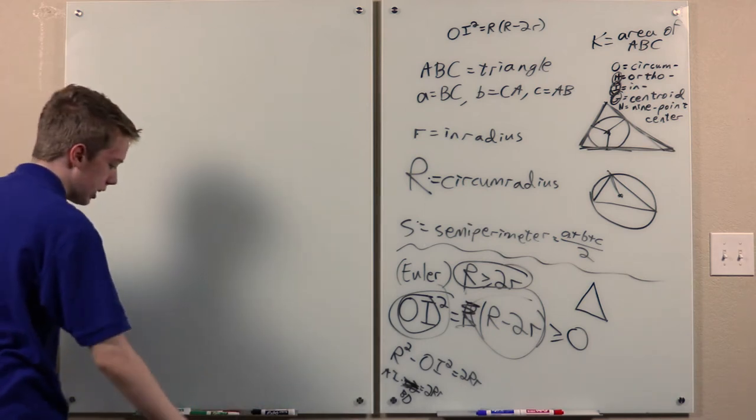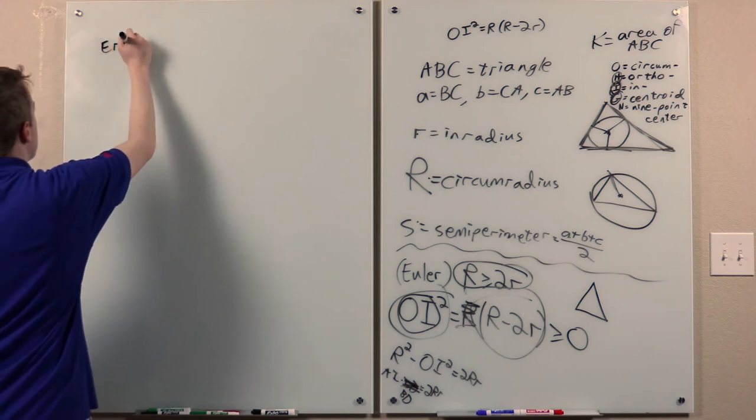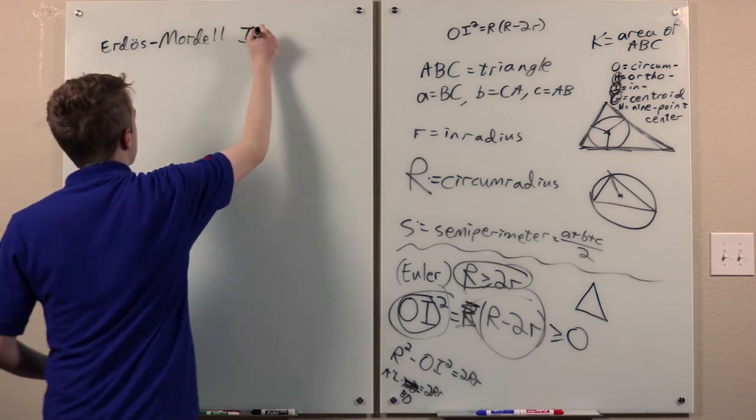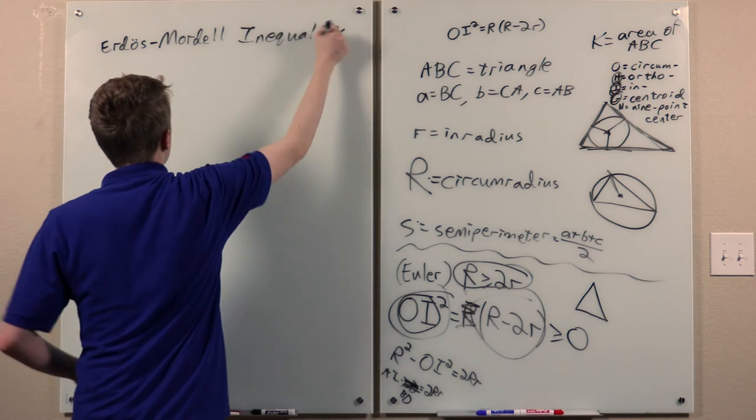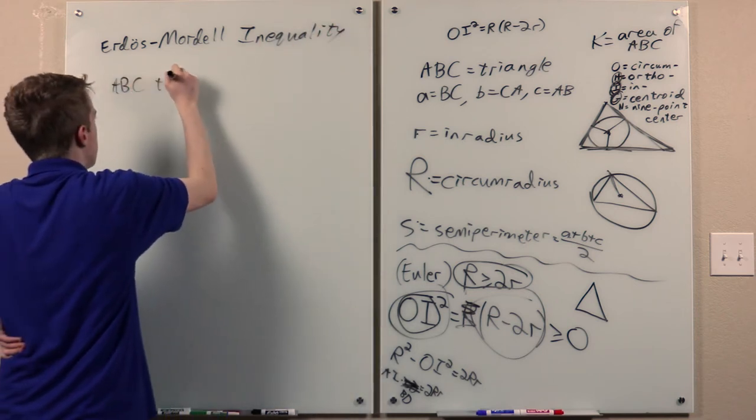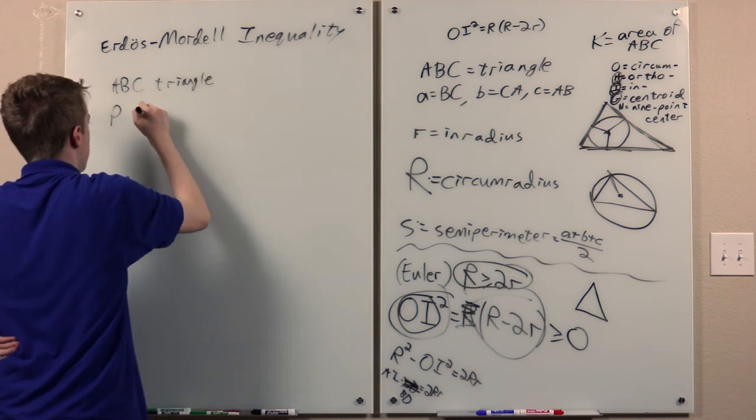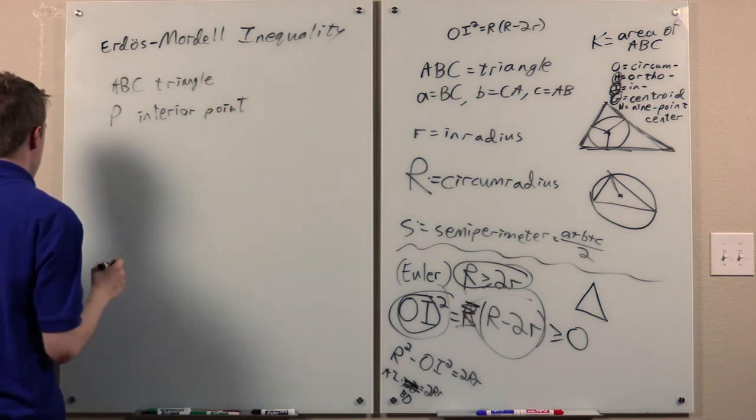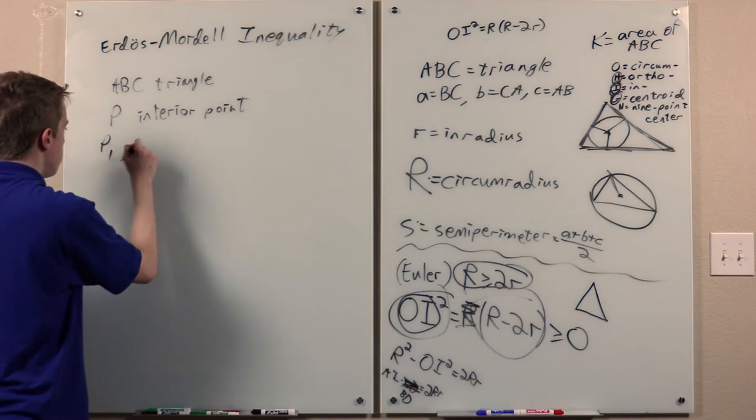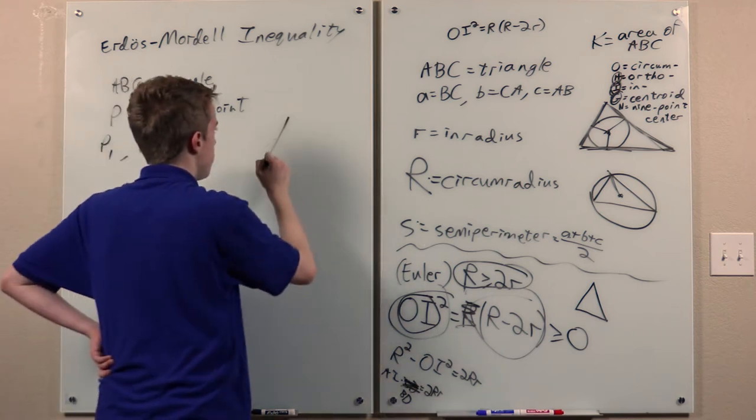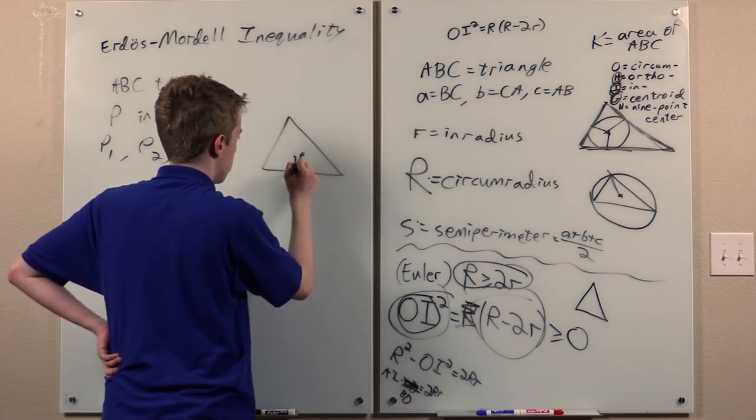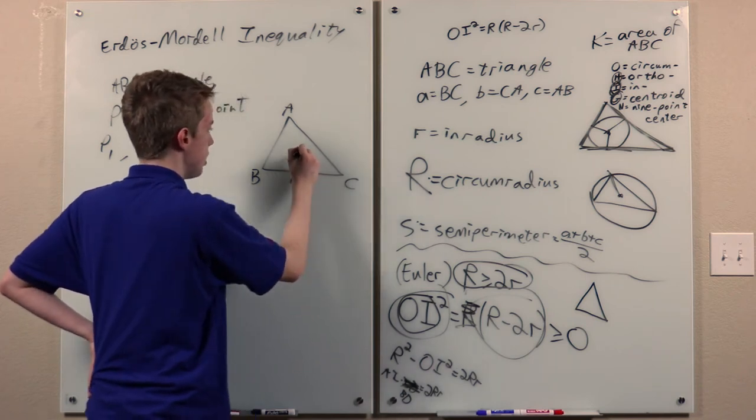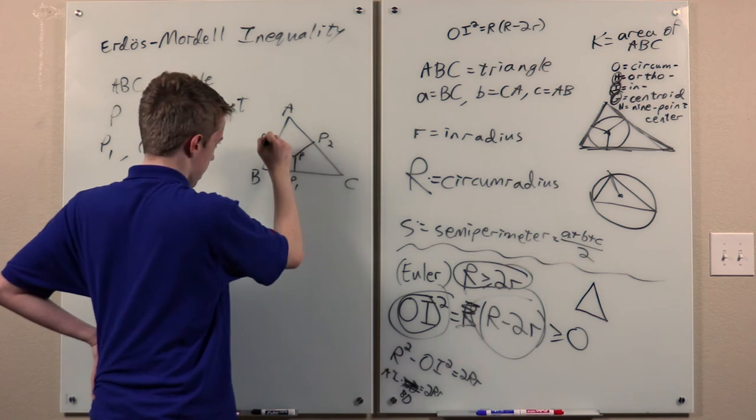The Erdős-Mordell inequality. Which is... Let a, b, c be a triangle. And let p be an interior point. And let p1, p2, and p3 be the feet of the perpendiculars. From p to bc, ac, and ab, respectively.